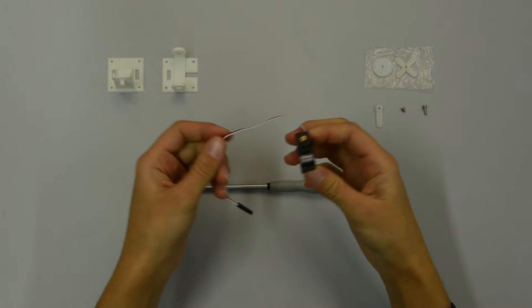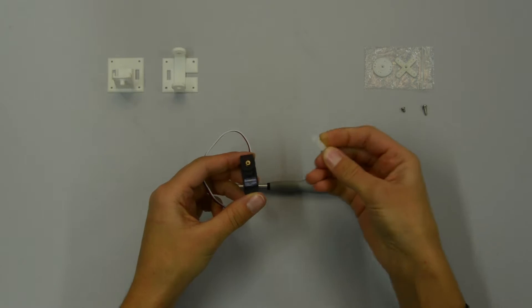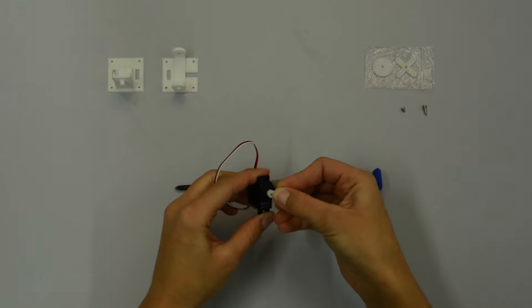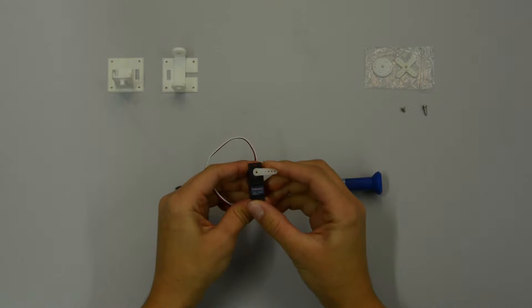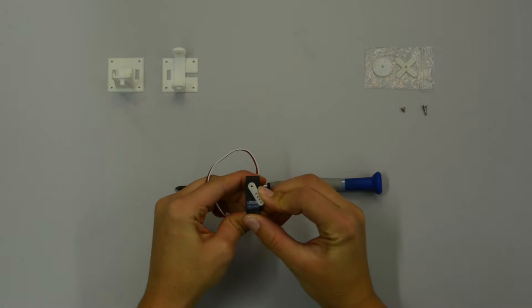First, we will move the servo to approximately the middle of its range. For this, use the plastic horn that comes with the servo. Once attached to the output shaft, it allows you to move the shaft and find the end of the approximately 190 degrees of range of motion.